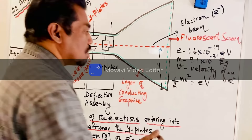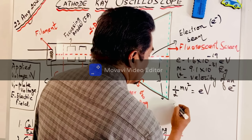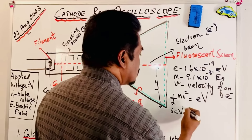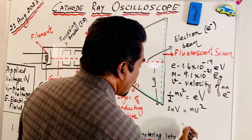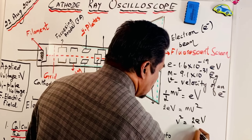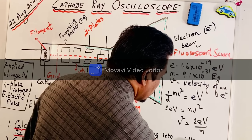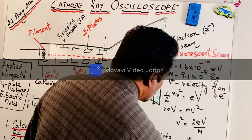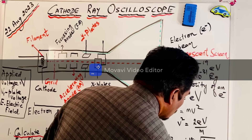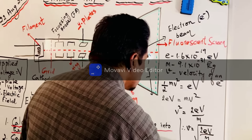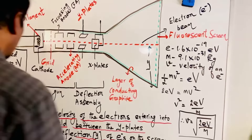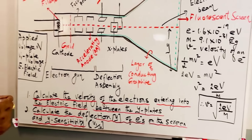Now we can calculate the value of v. Rearranging: 2eV = mv², so v² = 2eV/m. This is the formula for the velocity of an electron entering the electric field between the Y plates.